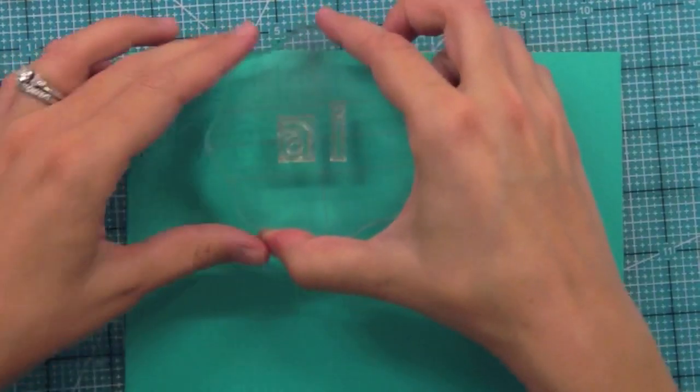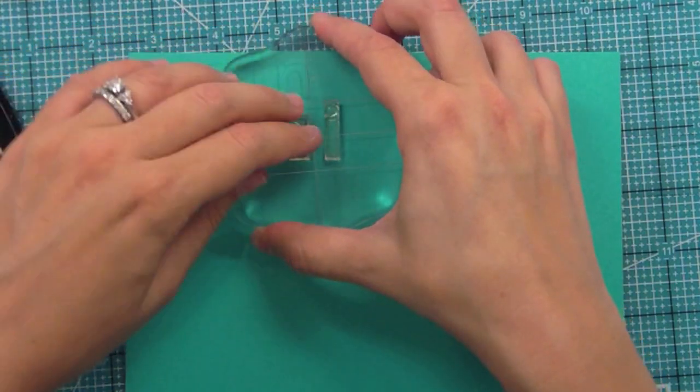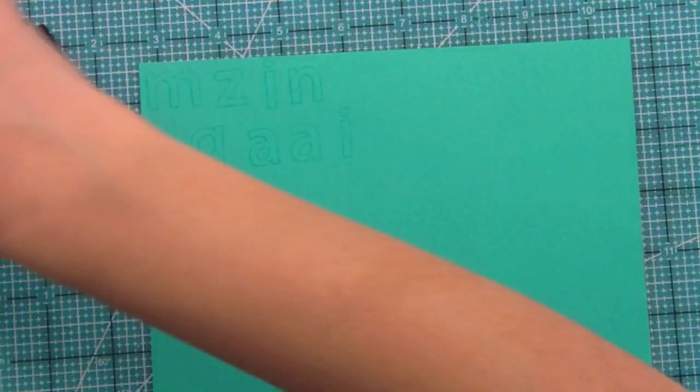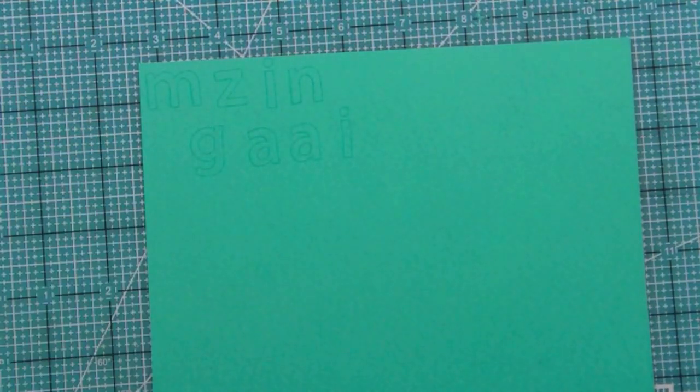I'm going to stamp these out. And then I'm going to take the A and the I and re-stamp them. I need another A. And then the I was a little too close to the top to cut around it. That was just a mistake I made. So I just stamped it again. Super easy.